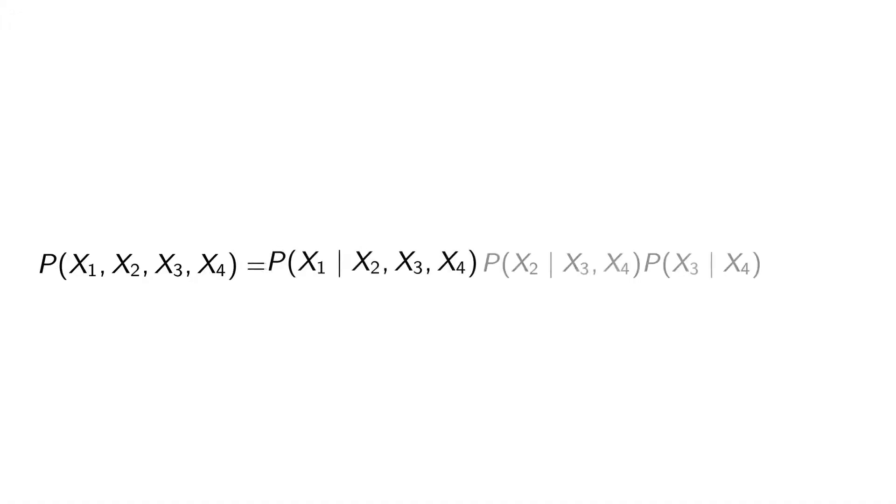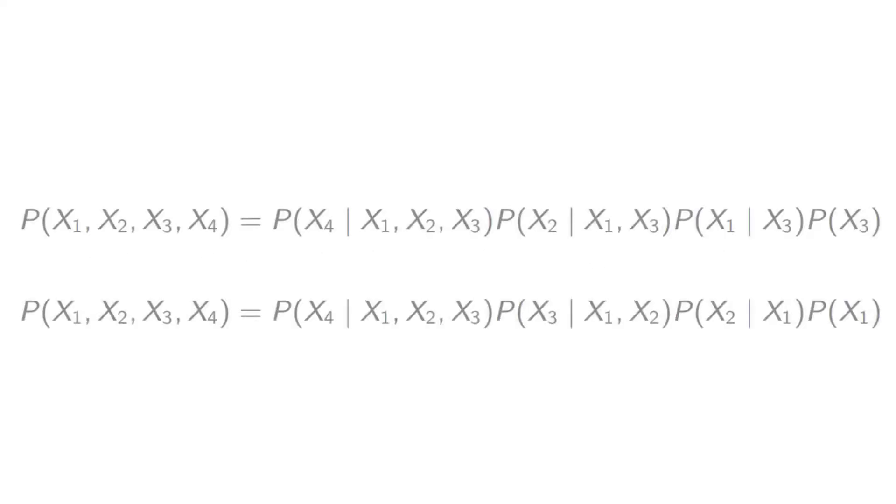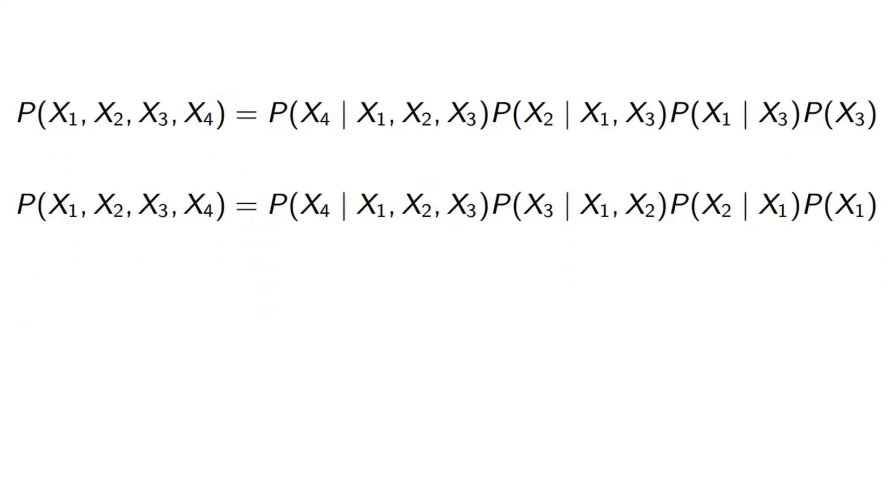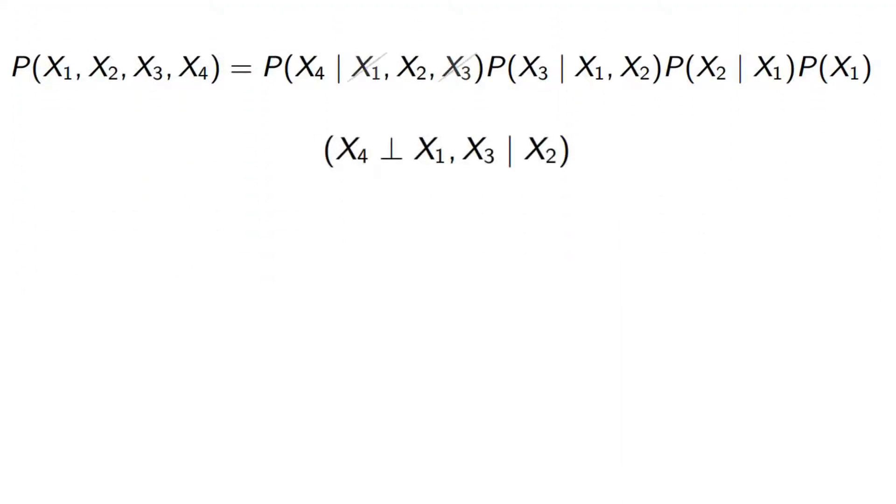Using the chain rule, the distribution can be factorized as the following, or with a change of the variable order as other forms.